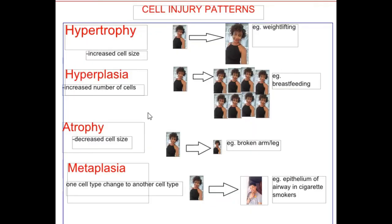Today I'll be talking about cellular injury patterns. These are basically changes that occur in the cell when something is wrong. I'll be using some examples for you guys to understand the terms better.